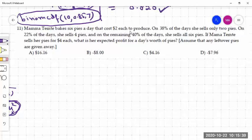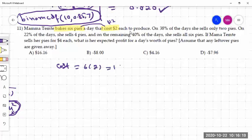Mama Tempted bakes six pies a day and cost is two dollars per pie. And it means that the cost would be then six pies for two dollars, so together the total cost gives us twelve dollars. So each day cost is twelve dollars. So cost is six times two, that is equal to twelve dollars.